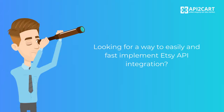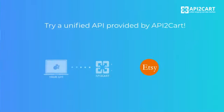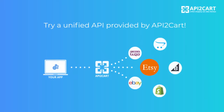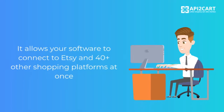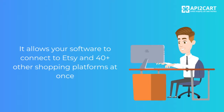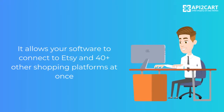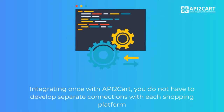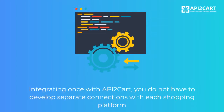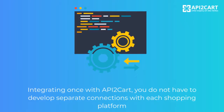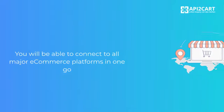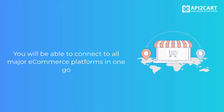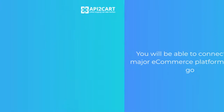Looking for a way to easily and fast implement Etsy API integration? Try a unified API provided by API2Cart. It allows your software to connect to Etsy and 40 plus other shopping platforms at once. Integrating once with API2Cart, you do not have to develop separate connections with each shopping platform. You will be able to connect to all major e-commerce carts in one go.